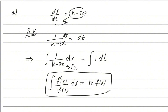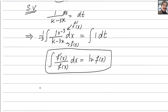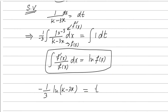The denominator is (k minus 3x). Its derivative with respect to x is minus 3, since k is a constant giving 0, and the derivative of minus 3x is minus 3. So we introduce minus 3 in the numerator and divide by minus 3 outside to balance. With the function and its derivative in place, the left side integrates to minus 1/3 times ln(k minus 3x), giving: minus 1/3 ln(k minus 3x) = t + c.